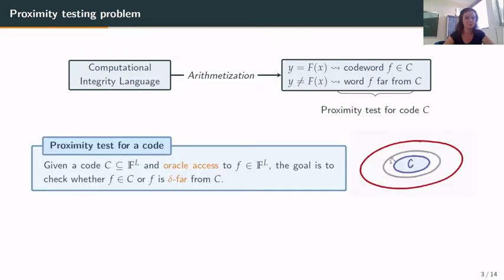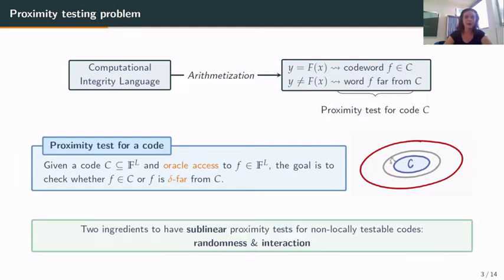So what is a proximity test? Given a code C and oracle access to a function, we want to check whether the function is in the code or is delta-far from the code. We cannot say anything about functions in the gray area, but we want to distinguish between the case where f is in the code or far from it. To make sublinear proximity tests for non-locally testable codes, we need two ingredients: randomness and interaction.